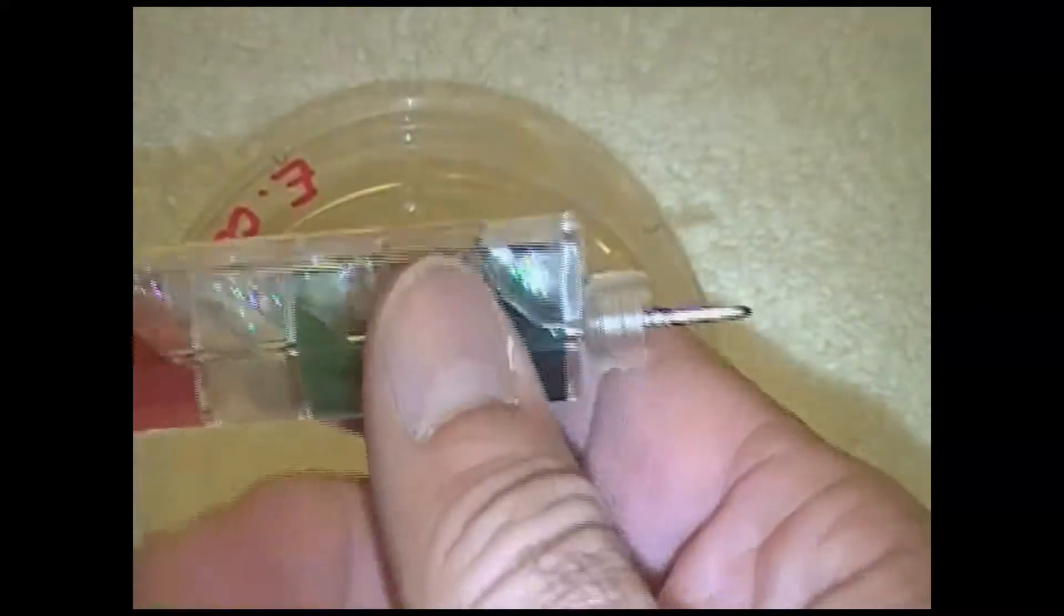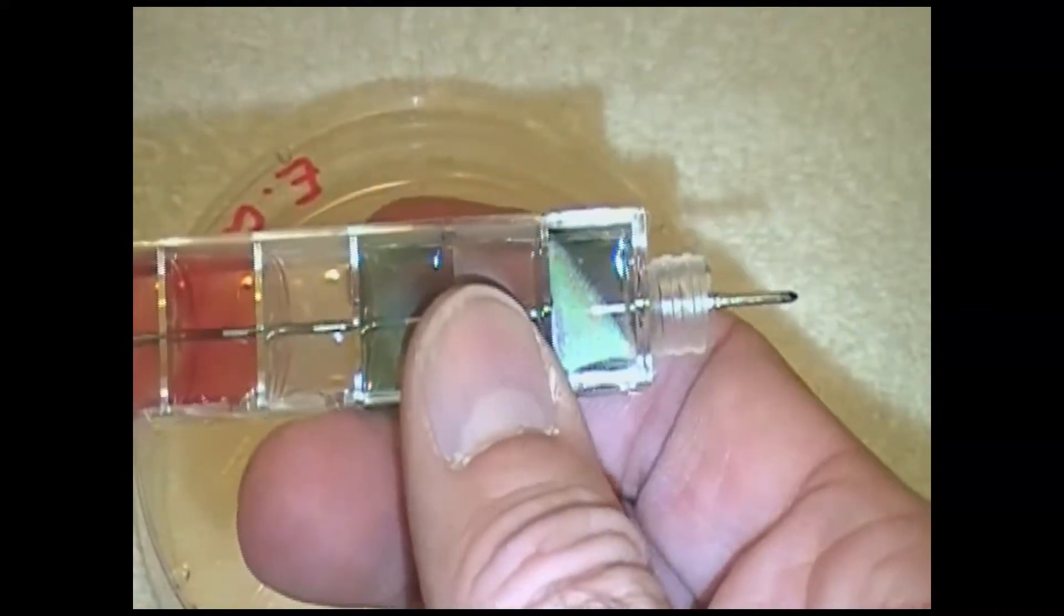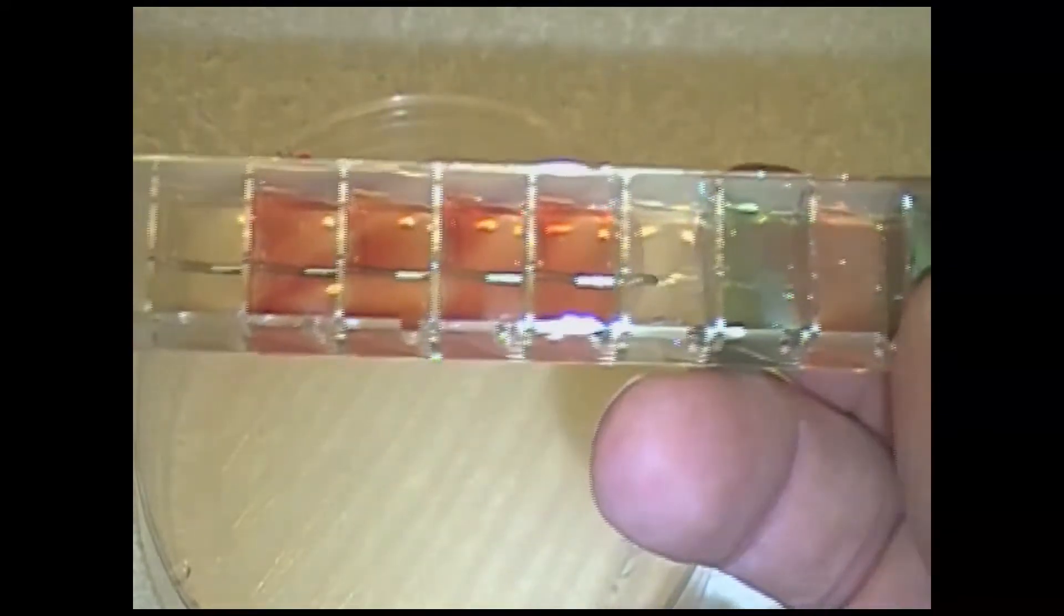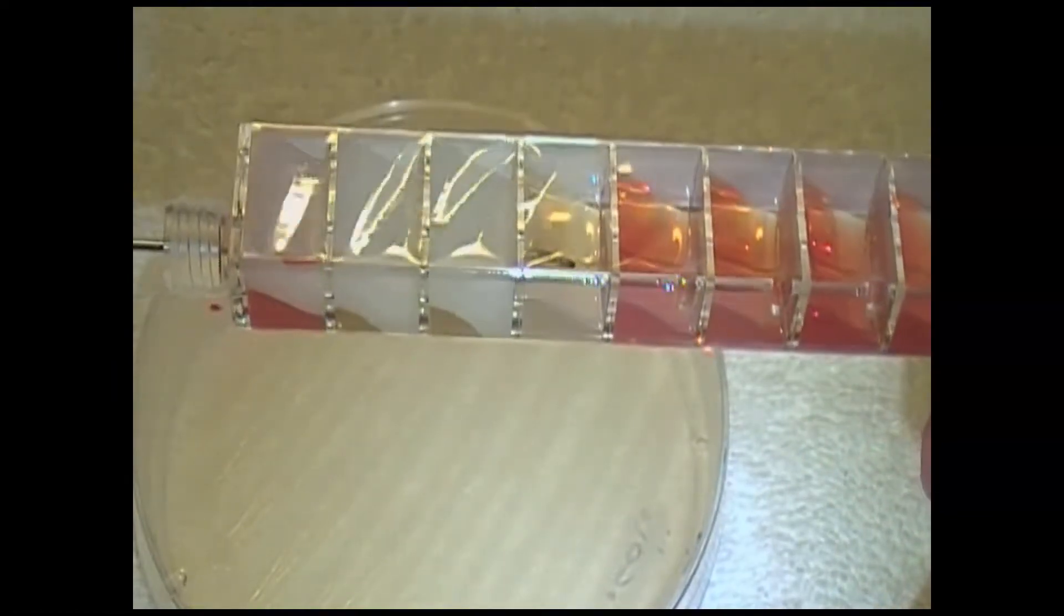We close the petri dish, and then we'll grab the handle over here. We are going to start to pull. As we pull, you will see the needle go through the center of the tube. You can see it going through the center of the tube. As it's doing that, it is inoculating the various compartments.